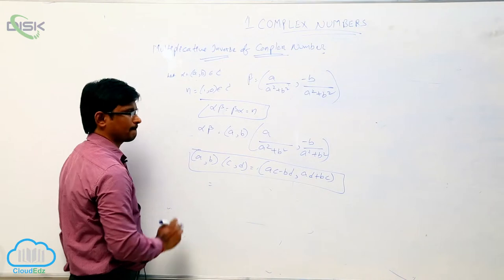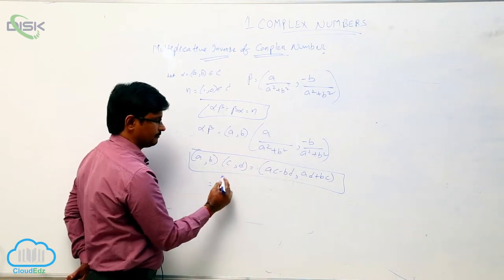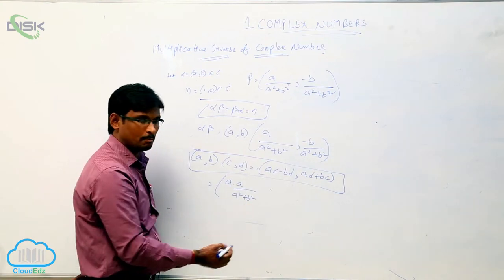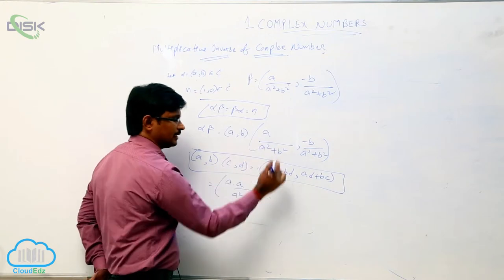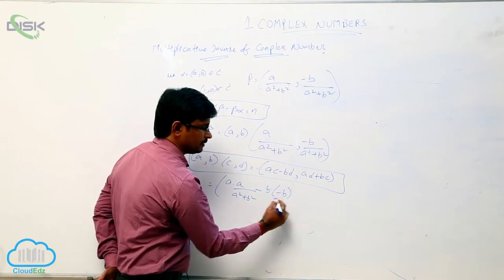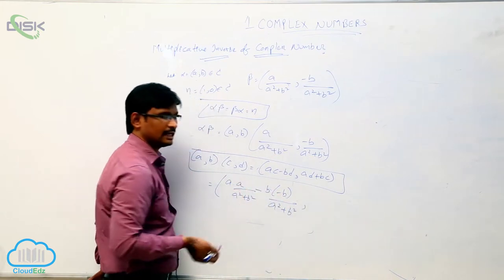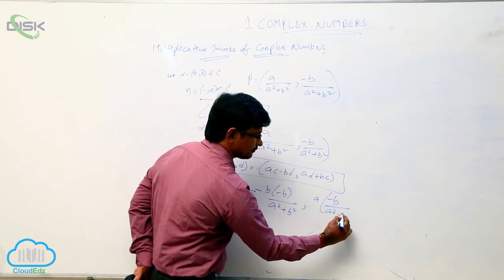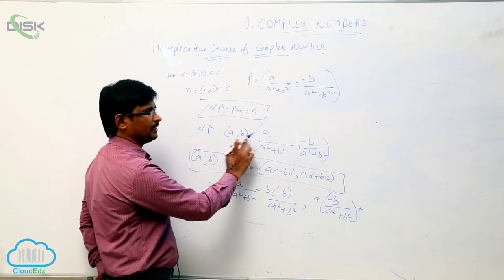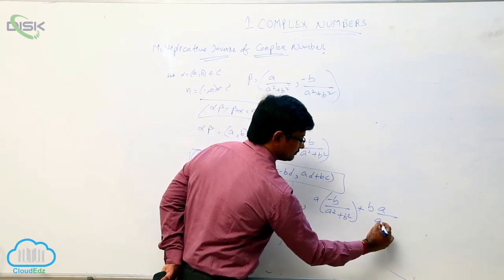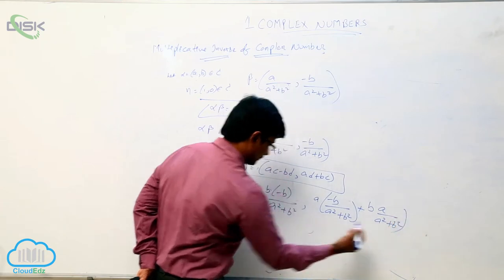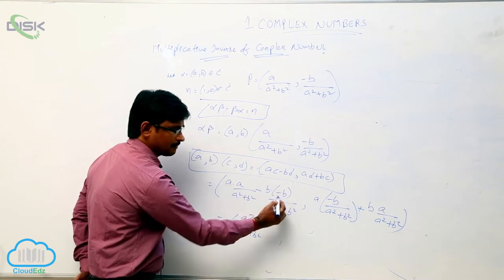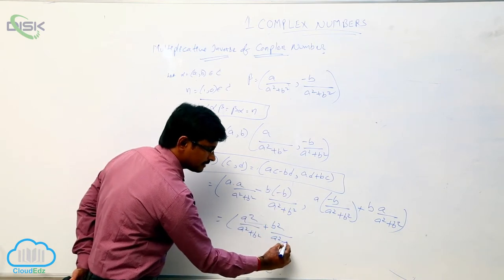Applying this property: the first component is a × (a / (a² + b²)) minus b × (b / (a² + b²)), and the second component is a × (-b / (a² + b²)) plus b × (a / (a² + b²)). Simplifying: the first component gives a² / (a² + b²) + b² / (a² + b²), and the second gives -ab / (a² + b²) + ab / (a² + b²).